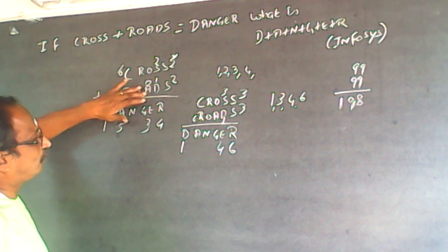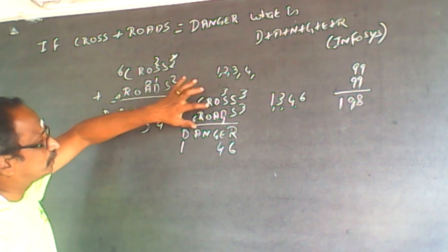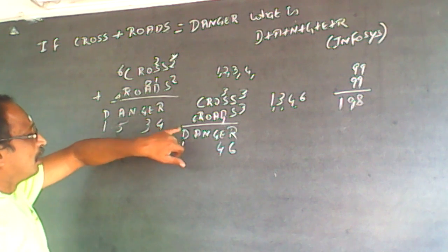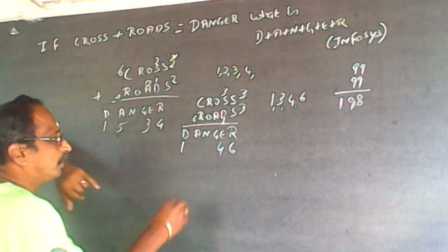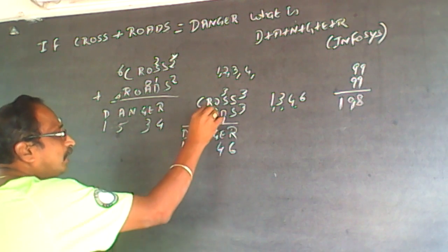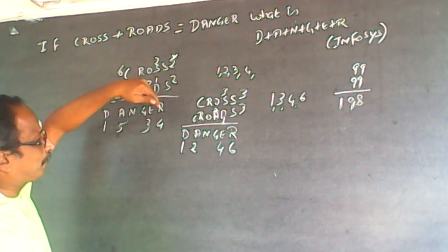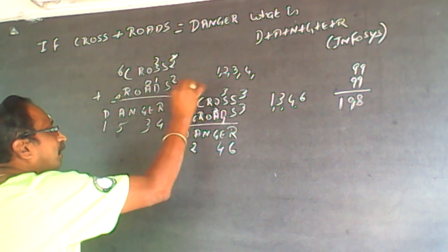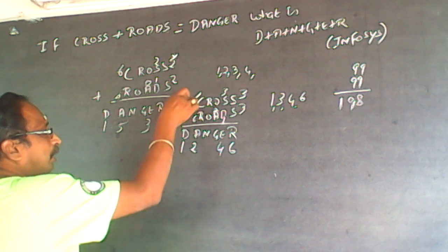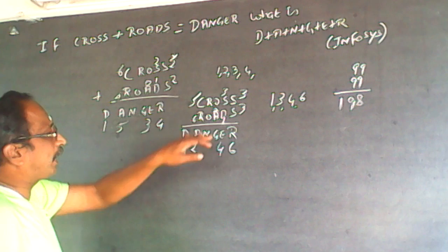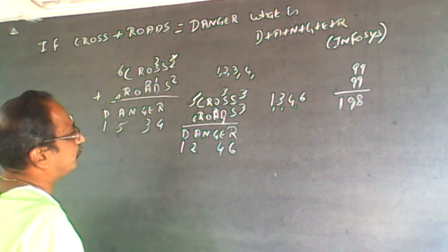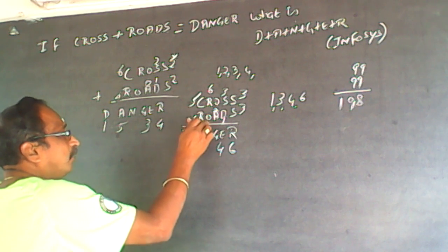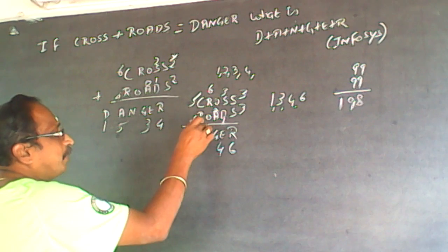A can't be zero because then O and G would have the same number with no carry over. A can't be one because one is already used. A can take two, since two is not used. If A is two, C has to be either five or six. C can't be six because R is six. If C takes five, there will be a carry over, and then from R and O: O has to be at least three. But three and four are ruled out, so O must be at least seven.